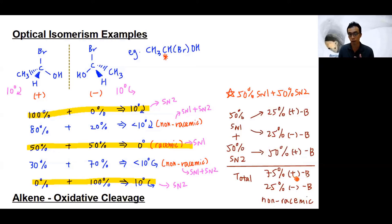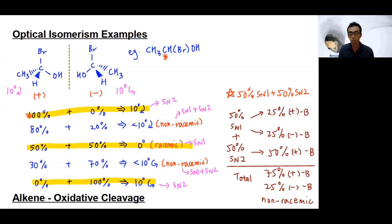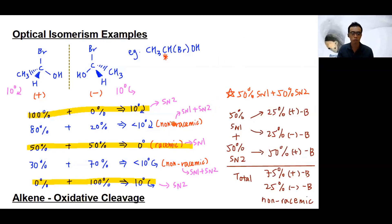The expected optical activity for this non-racemic mixture: since there is a majority of the plus isomer, the overall rotation is clockwise, but the magnitude is less than 10 degrees — less than the pure sample. In summary, if the optical activity of a reaction mixture is smaller than the pure sample, it indicates a non-racemic mixture, which in nucleophilic substitution arises from a combination of both SN1 and SN2 mechanisms operating simultaneously.